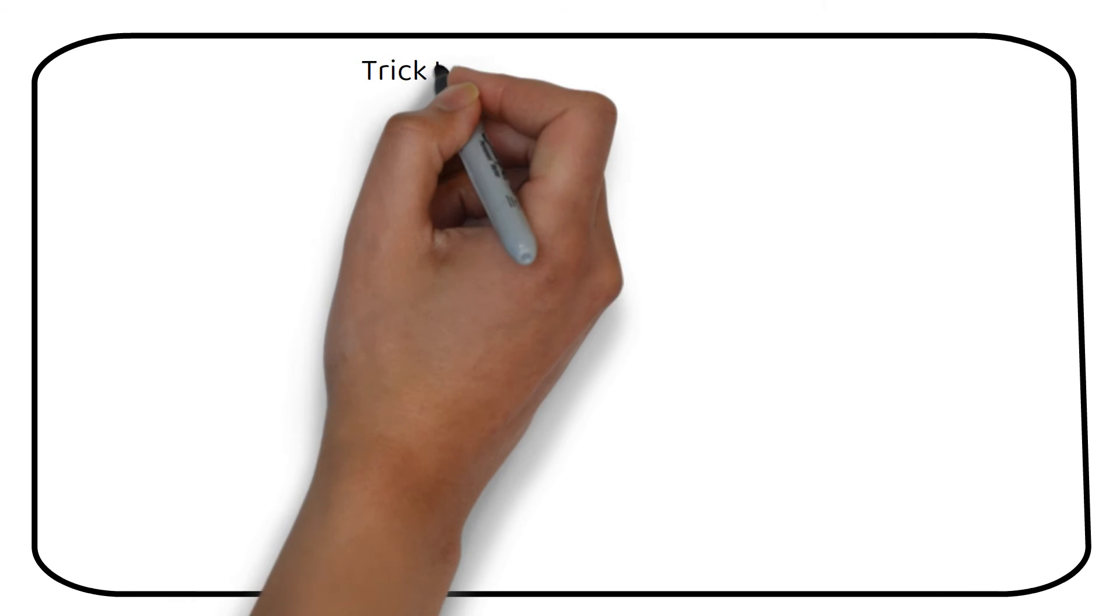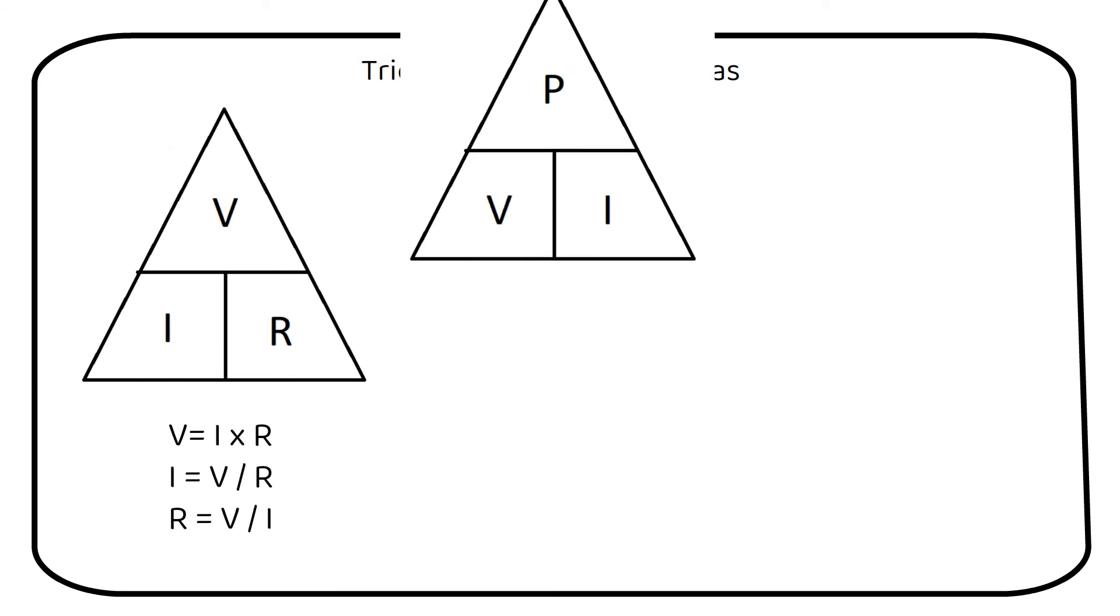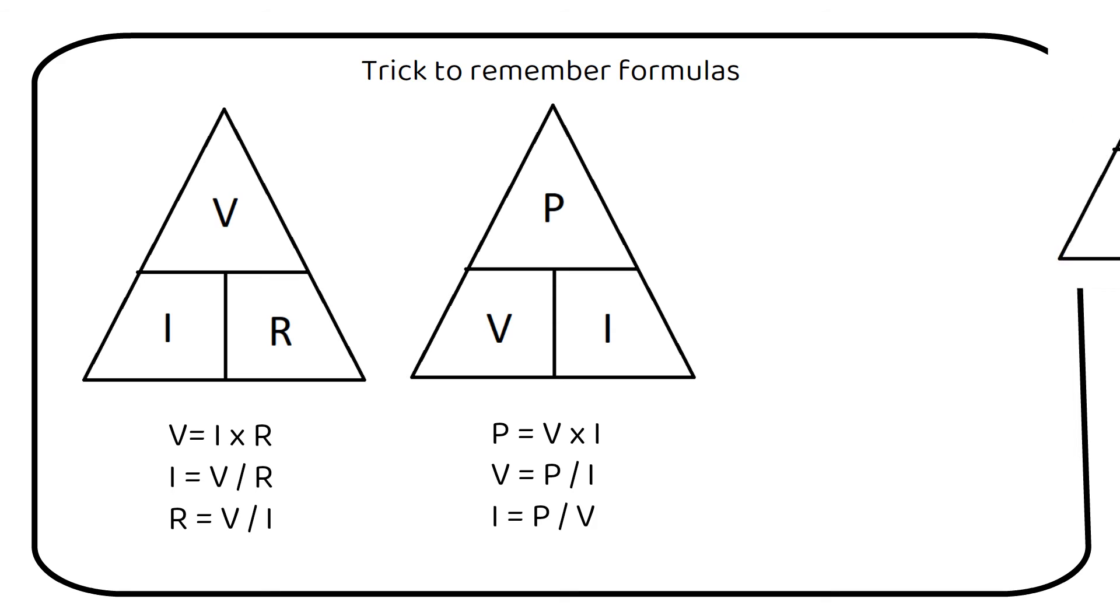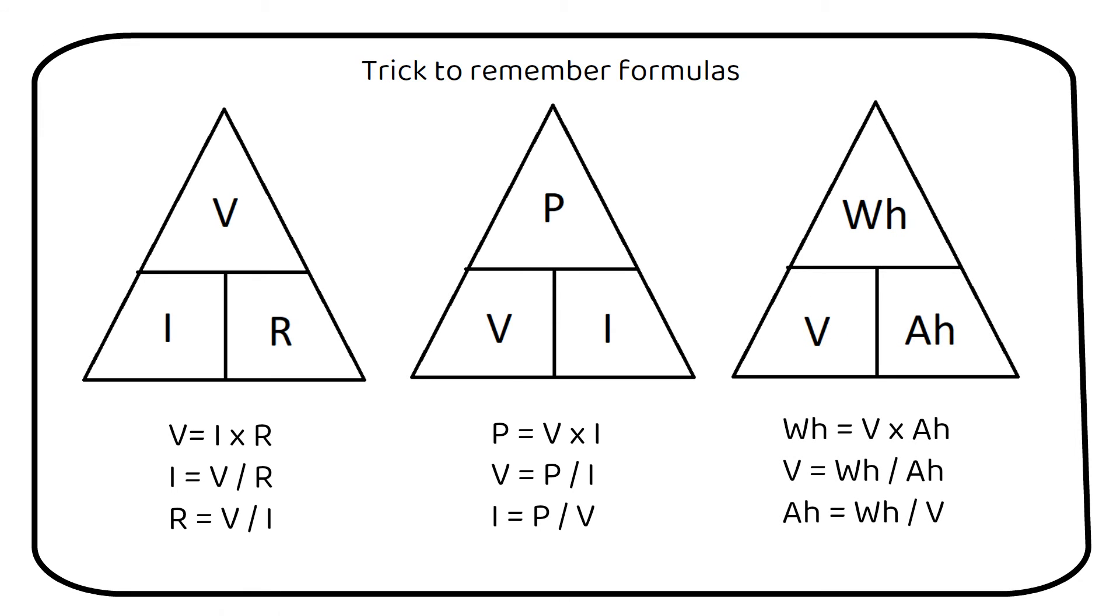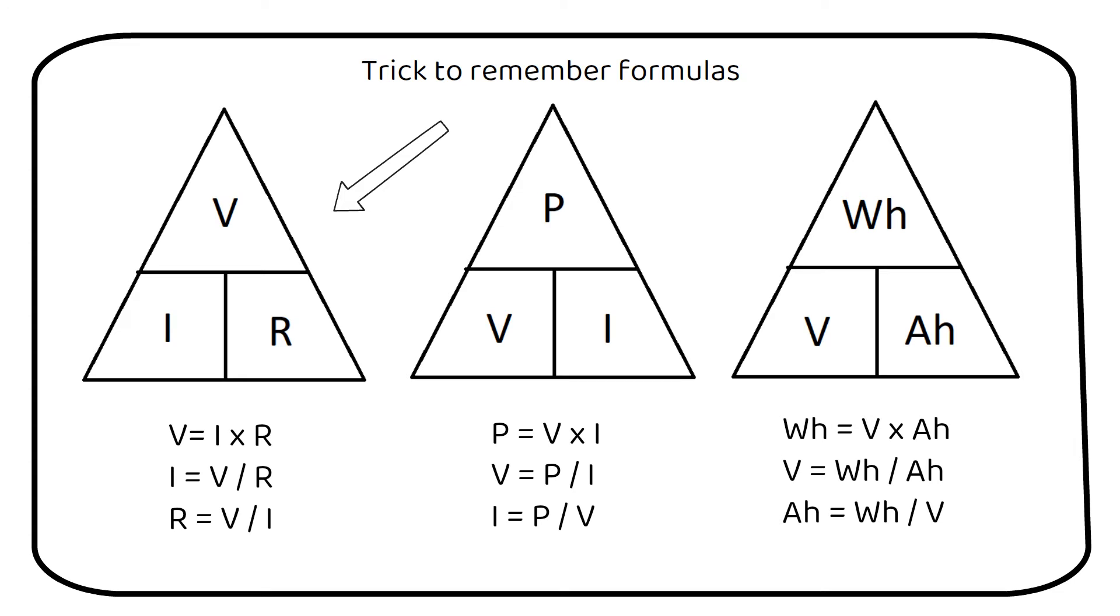The trick to remembering the formula is to place them in a triangle. You can then figure out when you need to multiply and when to divide. As you can see, if you need to know the voltage, then you multiply current and resistance. If you need the current, then you divide the voltage by the resistance and so on.